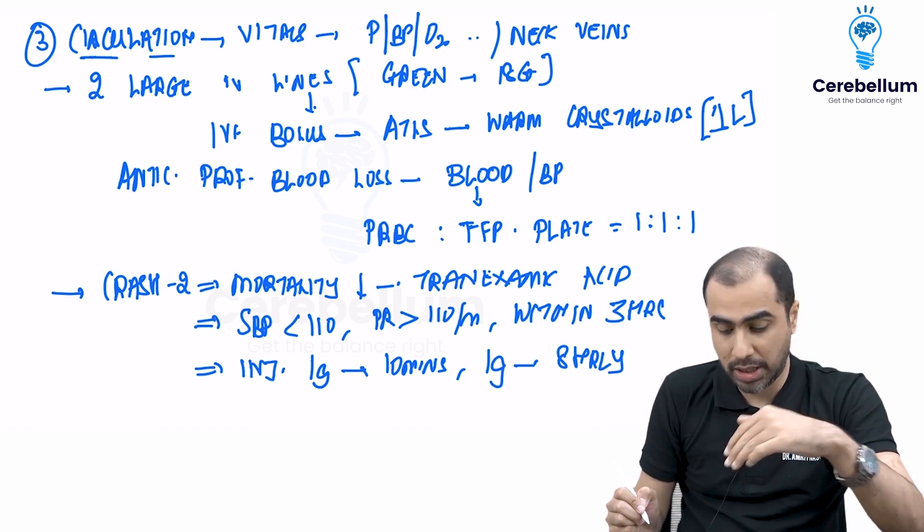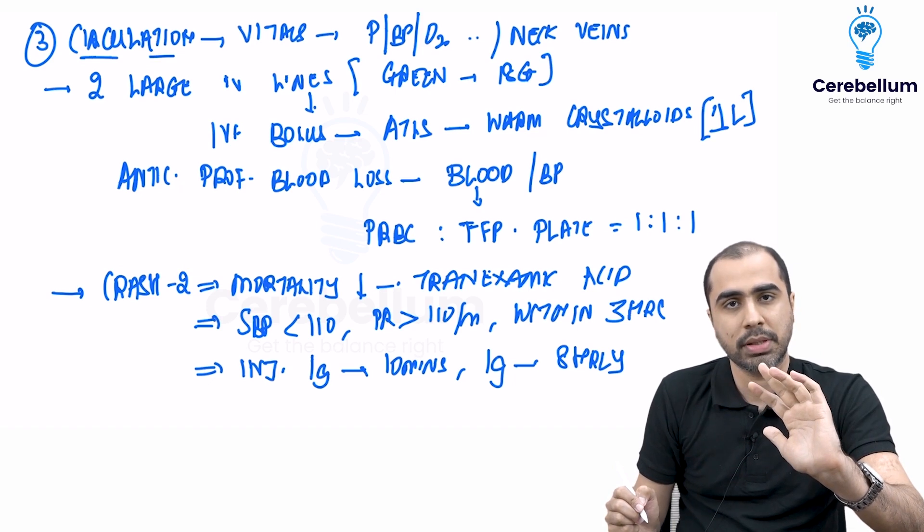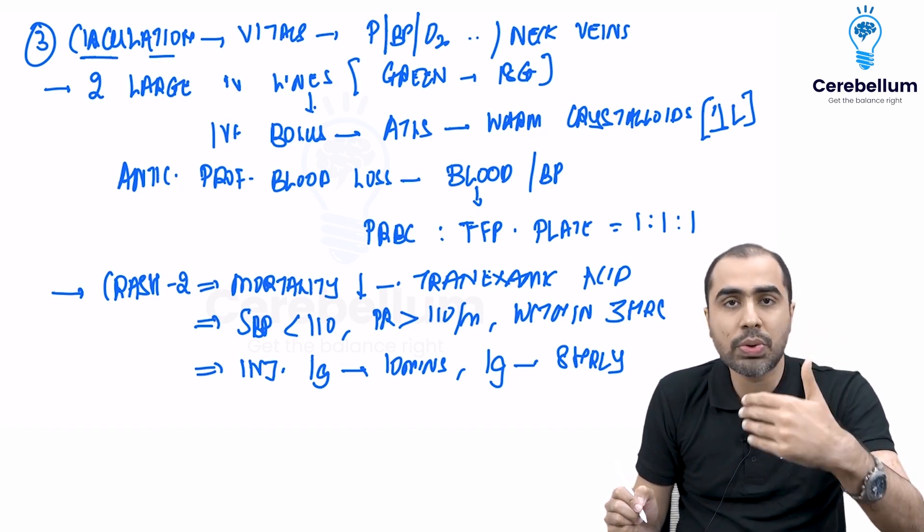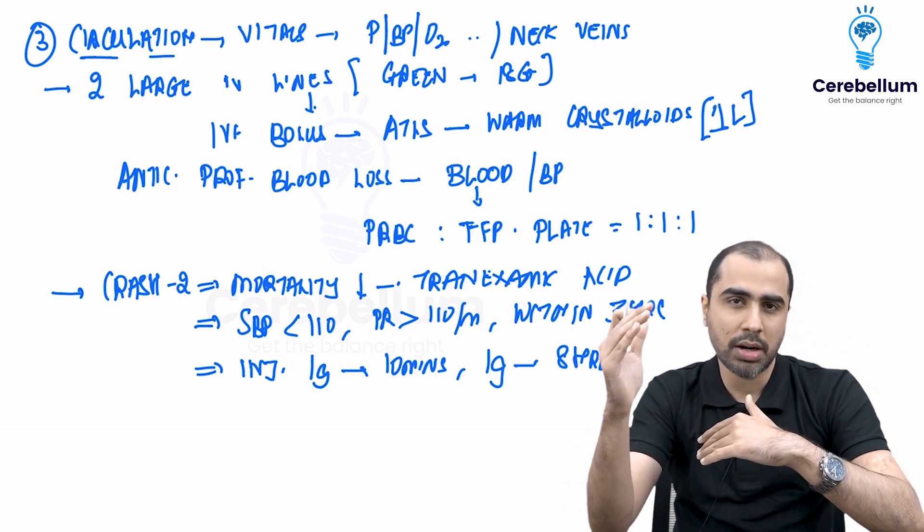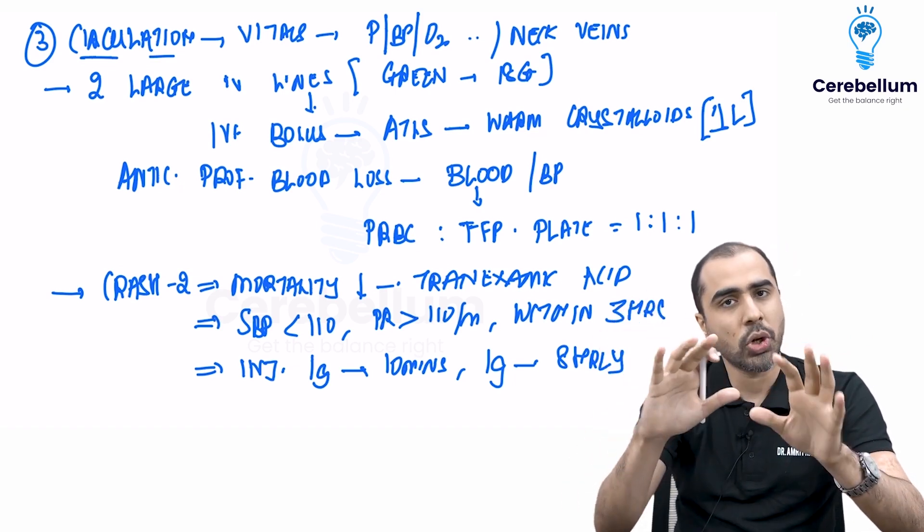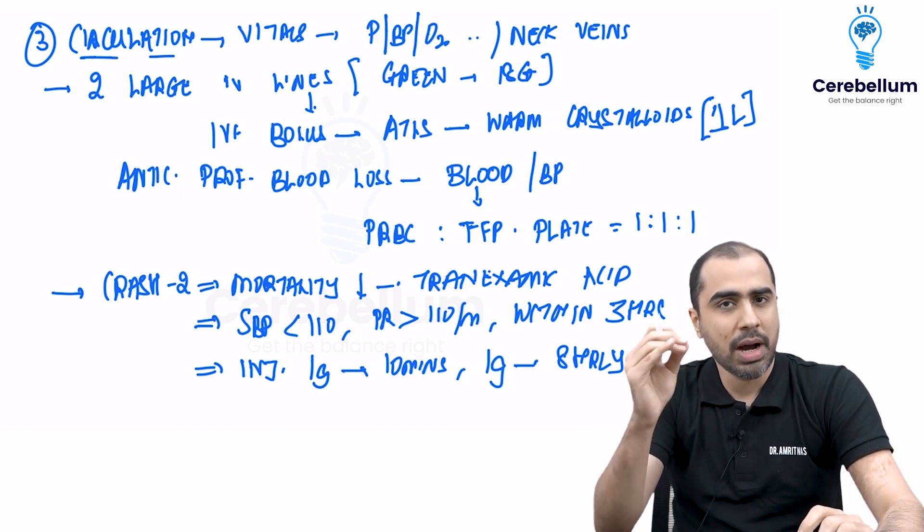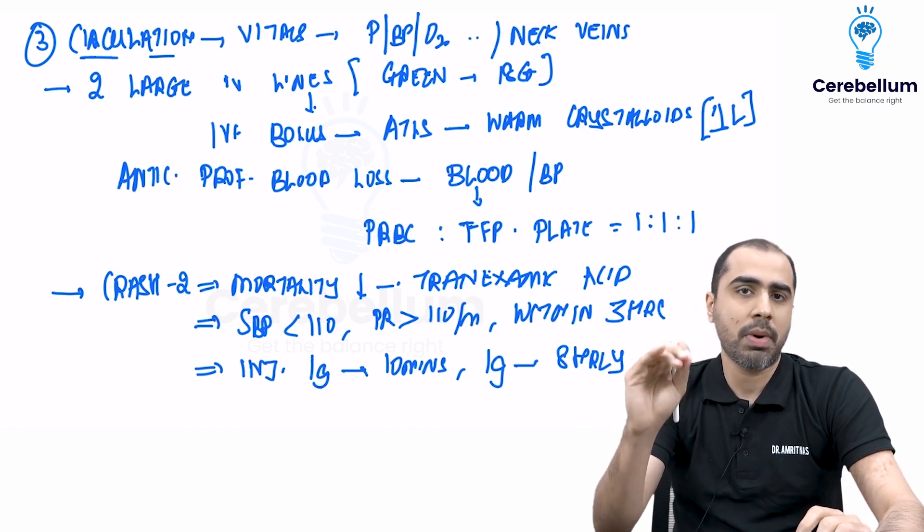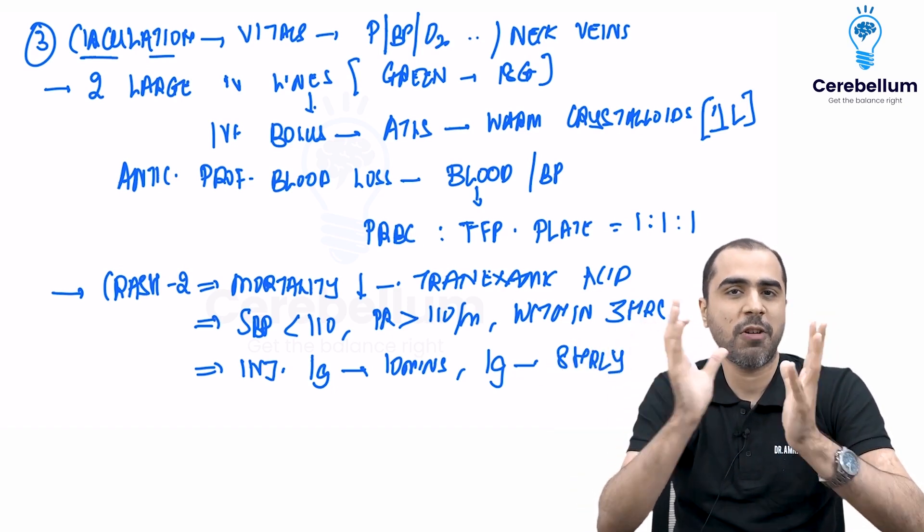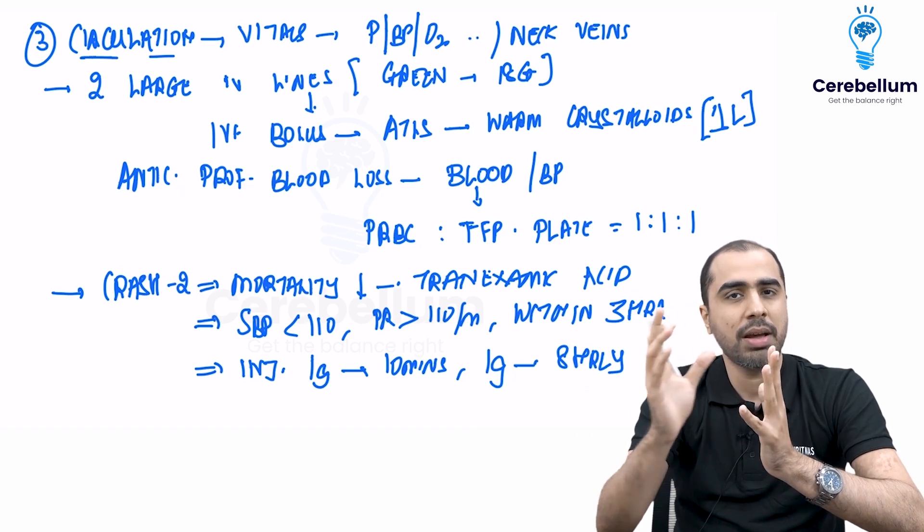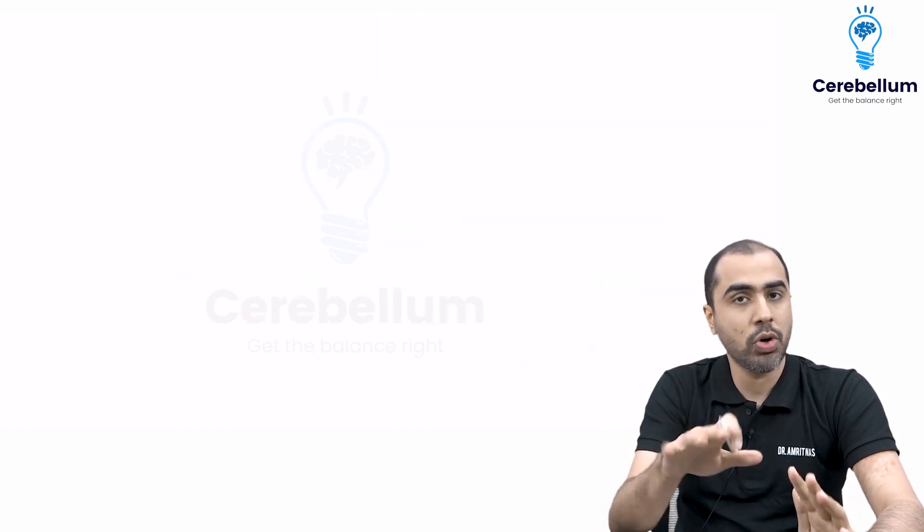So this is about circulation. Once you do this, the vitals should start stabilizing. The pulse rate should start coming below 110, the systolic blood pressure should stabilize. There is a concept called permissive hypotension which also is a part of damage control surgery. But essentially, these are the main pillars of primary survey - that is airway, breathing, and circulation. All the important questions on these topics are going to come from these.